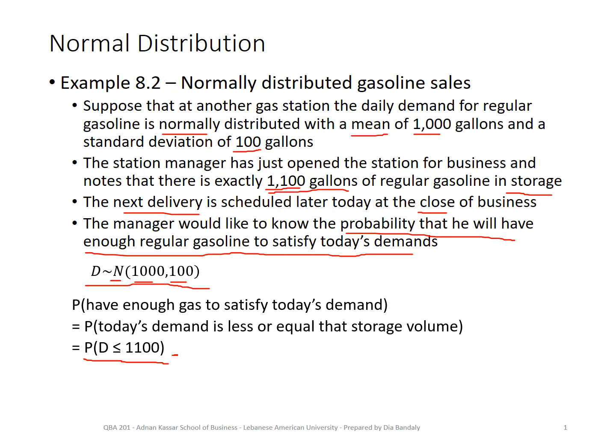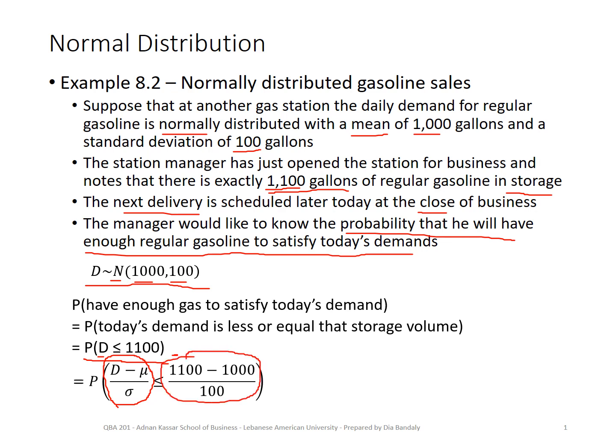Once you reach this probability statement stage, everything that comes next is very technical and easy. This is P(D ≤ 1100). Now let me standardize the variable D using the equation Z = (X − μ) / σ. In this probability statement I'll subtract μ and divide by σ on both sides of the inequality. I have the right to do that, and I'm doing this specifically because I know that the left side becomes Z, and the right side becomes a numeric value.